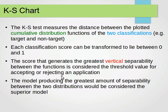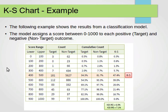To reiterate: we plot the cumulative distribution functions of the two classes — target and non-target — against the score, and find where the greatest vertical separability occurs between the two functions. Let's take an example for things to make sense. The following example shows some results from a classification model.